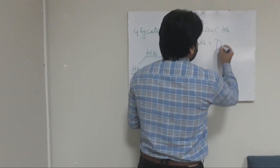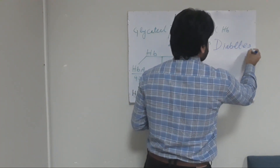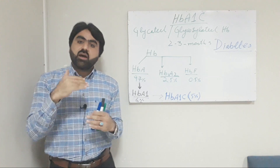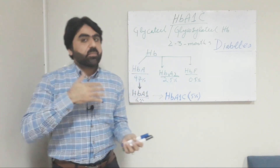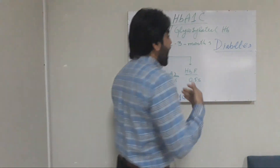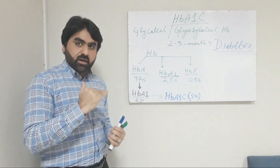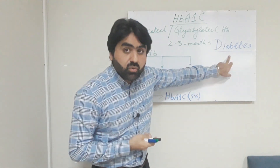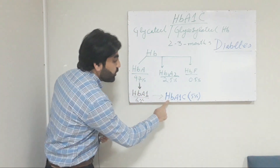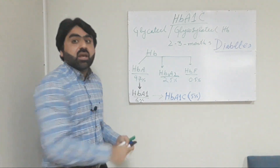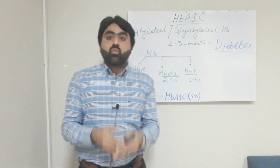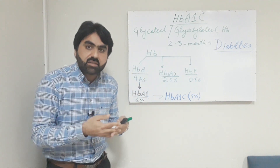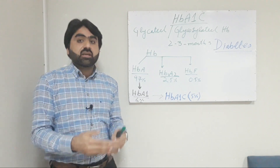Now let's discuss what happens in diabetes. We know that diabetes is a metabolic disorder in which there is an increased level of glucose in the blood of an individual — in other words, hyperglycemia. Normally, glucose in the blood attaches to hemoglobin A1c in a non-enzymatic reaction, and when this glucose attaches to HbA1c, this hemoglobin is known as HbA1c, or glycosylated or glycated hemoglobin.